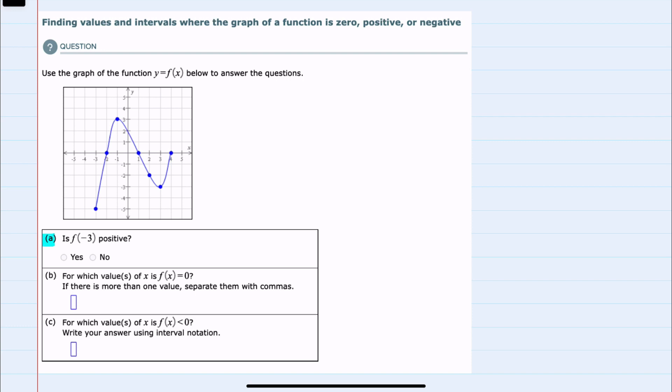The first question, A, asks is f(-3) positive? To find f(-3), we look at where the x value is negative 3. So where the input is negative 3 would be here. When we plug a negative 3 into the function, we get this value, which from the graph looks like negative 5. So our question of is f(-3) positive? We would say no.